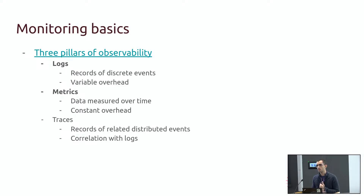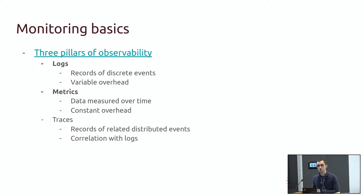Each of these has its own particularities. The one that programmers are most familiar with is logs — they are present in all applications and give us information about what's happening at a given point in a specific component of the system. They have a variable overhead, meaning their rate can vary according to user demand: more users means more logs, no users means potentially none.